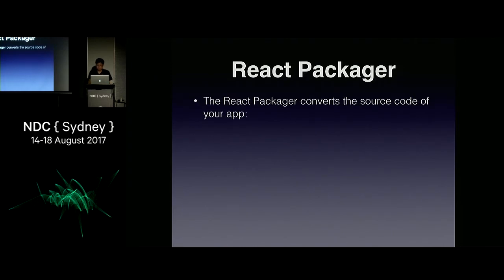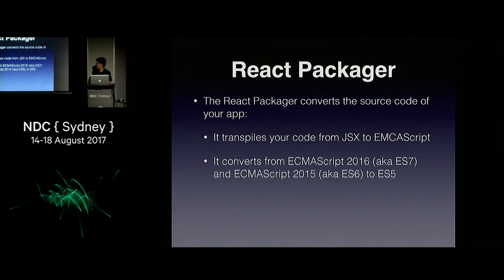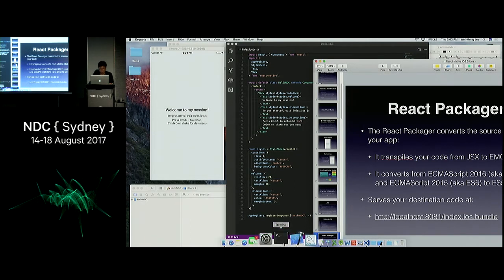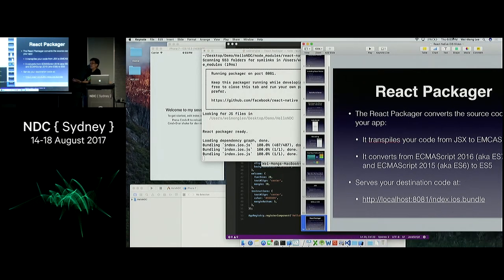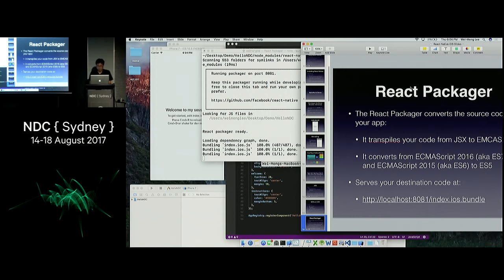The React Packager basically converts the source code of your app. It transpiles your code from JSX to ECMAScript, and it converts your code from ECMAScript 2016 (ES7) and ECMAScript 2015 (ES6) down to ES5. When you run your application, this is the package manager — it runs behind the scenes as a web server application, serves the compiled code at a specific URL. If you punch that URL into a browser, you'll see all the compiled JavaScript.